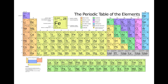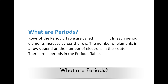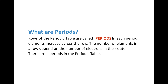Rows of the Periodic Table are called periods. In each period, elements increase across the row by atomic number. The number of elements in a row actually depends on the number of electrons in their outer shell. If you remember from the previous lesson, the electron cloud — that energy level, the top energy level — determines how many elements are in each row. On the Modern Periodic Table, there are seven periods.